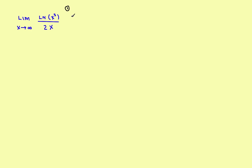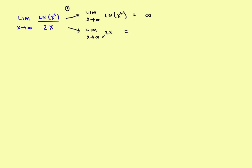Step one: find the limit of the numerator — the limit as x approaches infinity of the natural log of x cubed. The natural log of a very large number goes off to positive infinity. Now find the limit of the denominator — the limit as x approaches infinity of 2x. As x goes off to infinity, twice x will also go to infinity. So you wind up with infinity over infinity, which means L'Hôpital's rule applies.